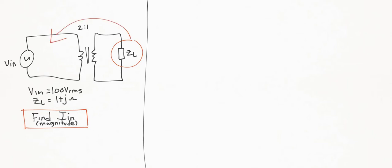Using the reflection resistance rule that we discussed in previous videos, we know that N_P over N_S squared times Z_L will give us that resistance as seen by V_in. So we'll call it Z_in.